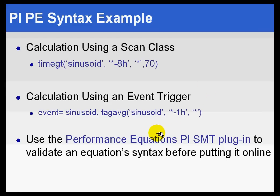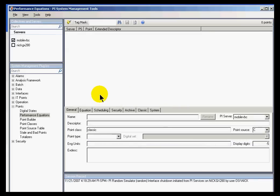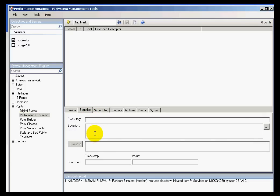Now, all of these calculations can be tested within SMT using the Performance Equations plugin. Let's take a look at this real quickly. If you go into Points, within Points it's Performance Equations, and this is where you would place your equation. You would place your expression right here, and then choose Evaluate.